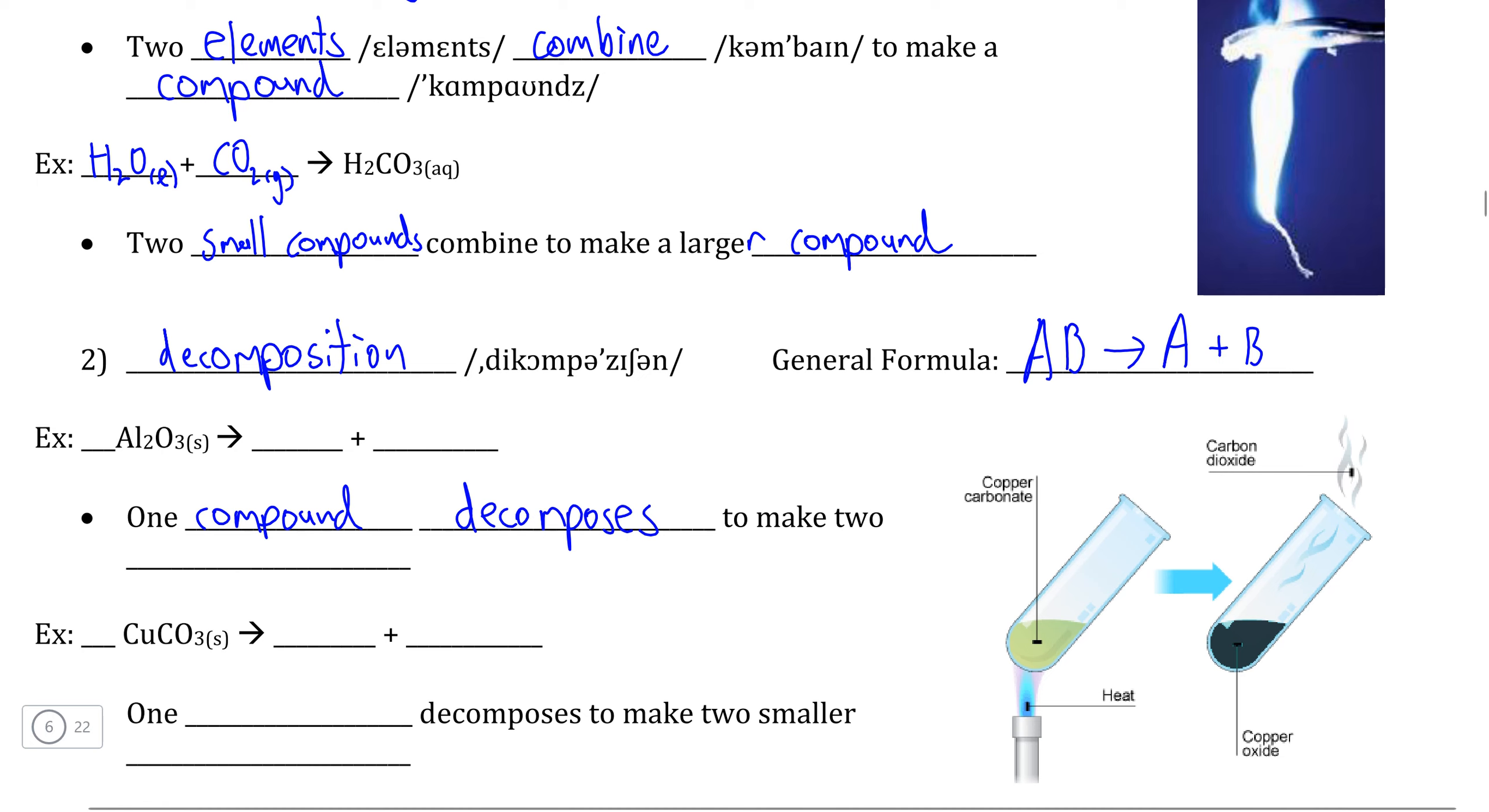So here, unlike in the synthesis reaction, we end up with two or more individual elements as the products, with our compound being the starting reactant. So in our example here, we're taking the compound aluminum oxide.